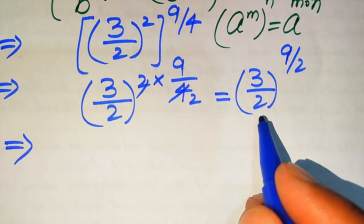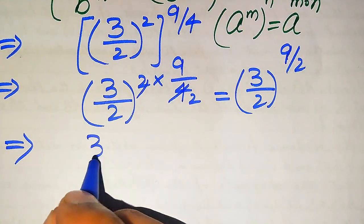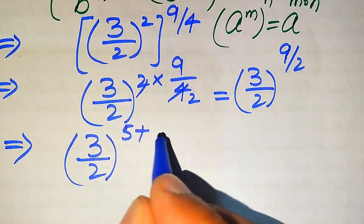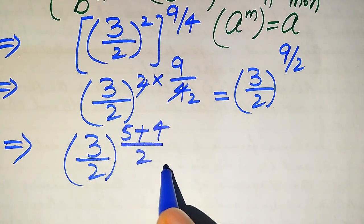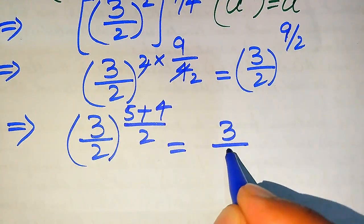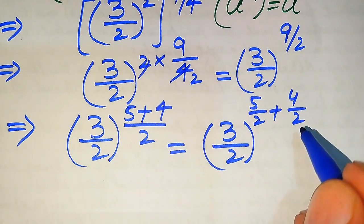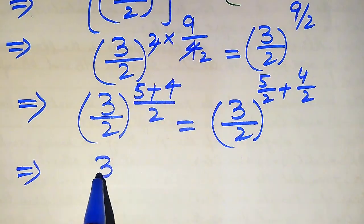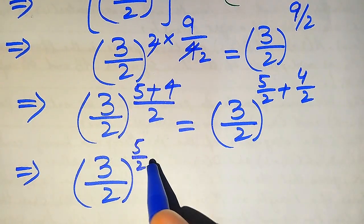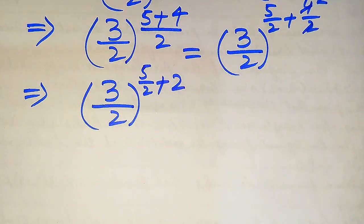We now have (3 divided by 2) to the power of 9 over 2. We rewrite the exponent 9 as 5 plus 4, so the exponent becomes (5 plus 4) divided by 2. Breaking this fraction, it is written as (3 divided by 2) to the power of 5 over 2 plus 4 over 2, and 4 over 2 simplifies to 2.